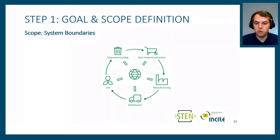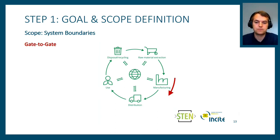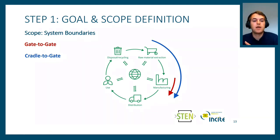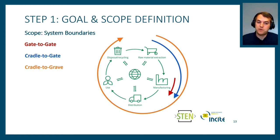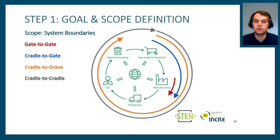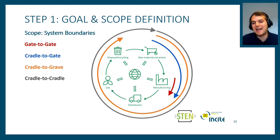In our scope we also define system boundaries. If we are only interested in our own production, we can do a gate-to-gate assessment. If we want to look at the full supply chain — including feedstock production, electricity production, and utilities — we conduct a cradle-to-gate assessment. Including transport, use phase, and disposal gives a cradle-to-grave assessment. From a circular economy perspective, we can talk about cradle-to-cradle. In the chemical industry, cradle-to-gate is often used because products are frequently inputs to many other downstream applications.